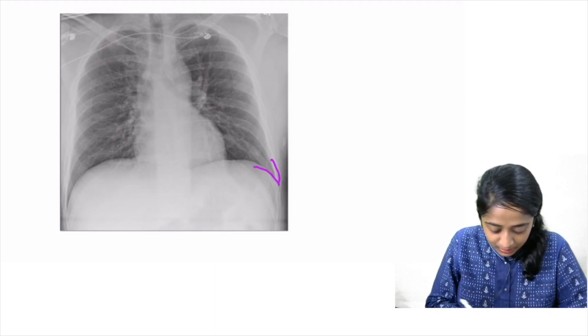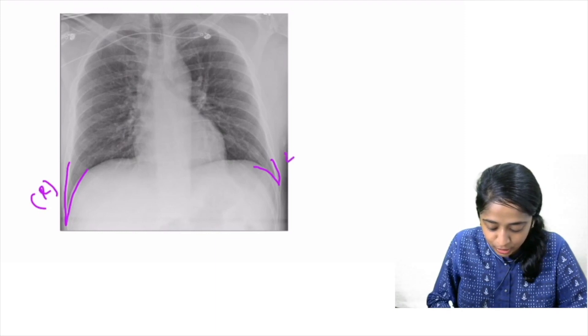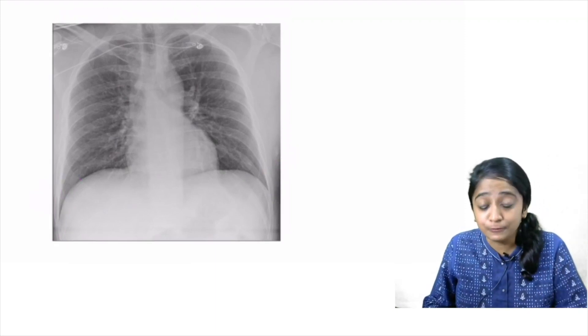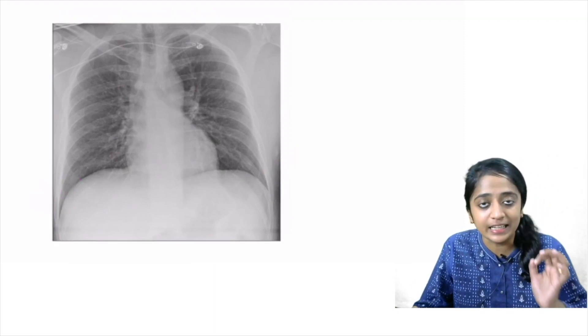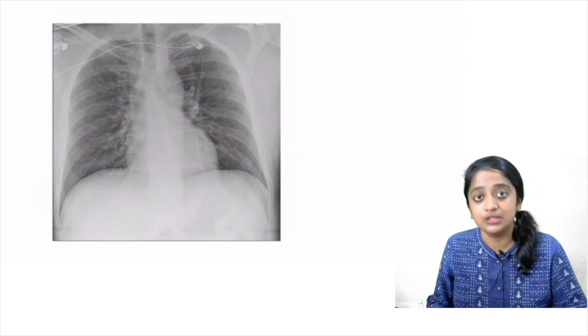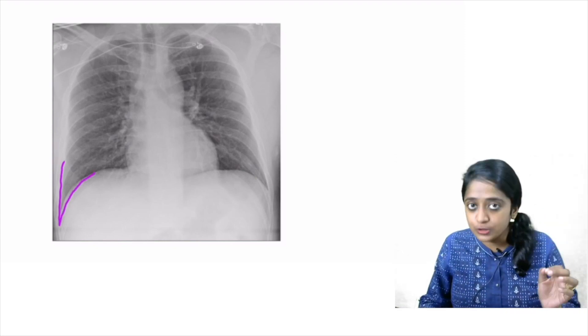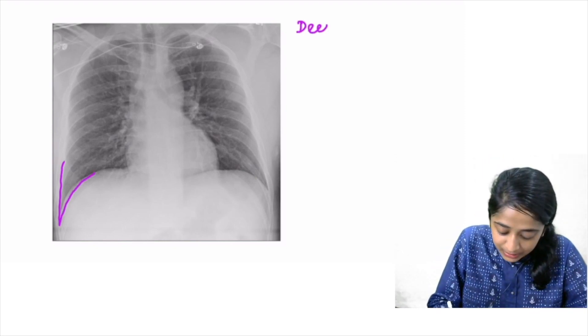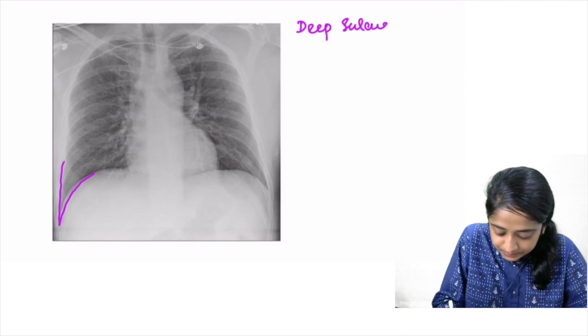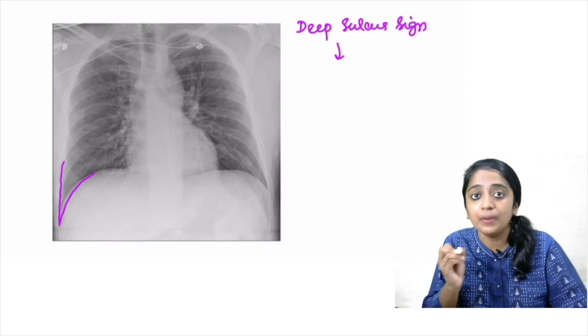I feel that the right costophrenic angle is much more deeper as compared to the left. So is this finding relevant? Does it indicate towards any particular pathology? The answer is yes. Now a question comes, where do you get deep sulcus sign?